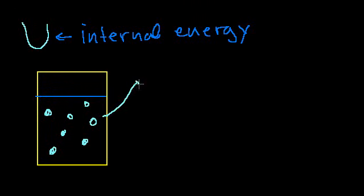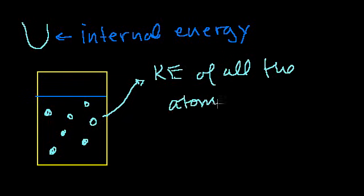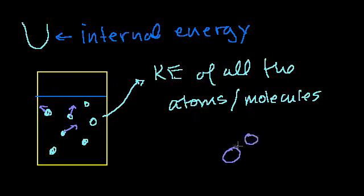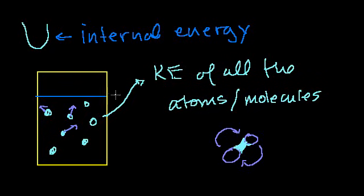For our purposes, especially in a first-year chemistry course, it's the kinetic energy of all the atoms or molecules. In a future video I'll actually calculate how much kinetic energy is in a container, and that'll be our internal energy, plus all other energy. So these atoms have some kinetic energy because they have translational motion. If they're individual atoms they can't really rotate, but if they're molecules they can rotate — there could be some rotational energy there. If we have bonds, those bonds contain some energy, and that is also included in the internal energy.